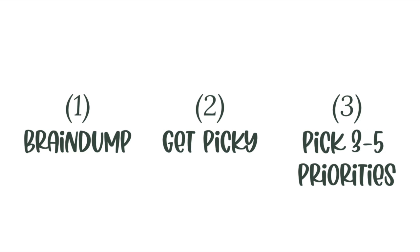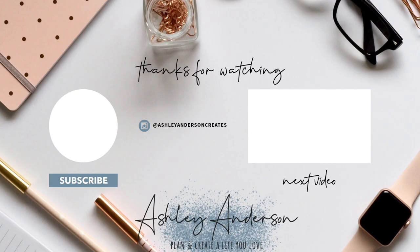To recap: step one — brain dump, write everything down you want to get done. Step two — get picky, evaluate your brain dump and figure out your most important tasks. Step three — choose three to five priorities to focus on. Don't overwhelm yourself, don't get into that negative planning cycle. Set your priorities, conquer your day, and you'll start to see that snowball effect of becoming a productivity master. You've got this — go set your priorities and crush your day!